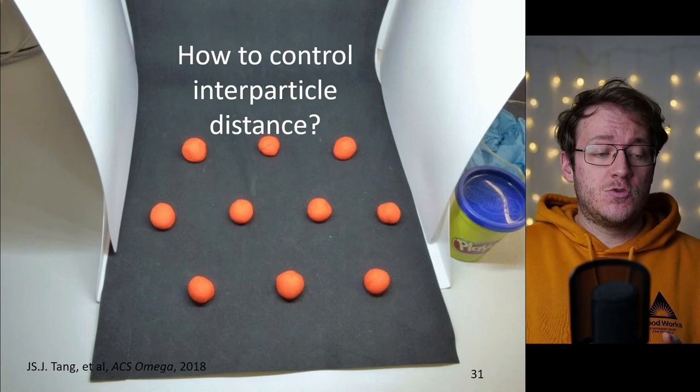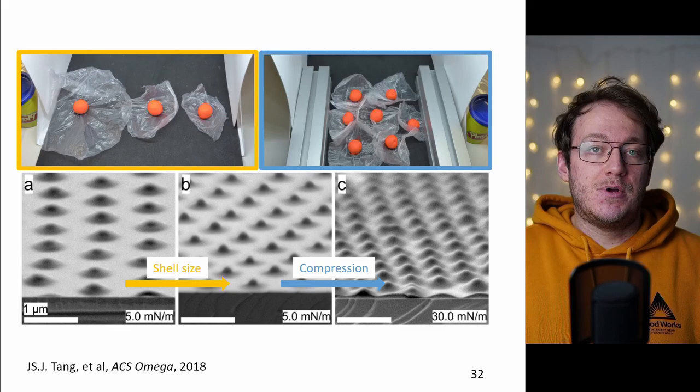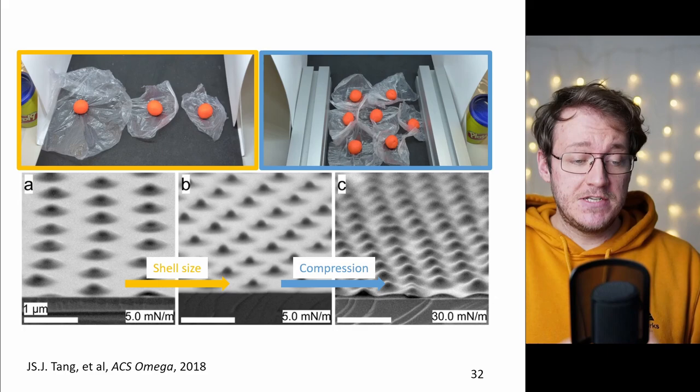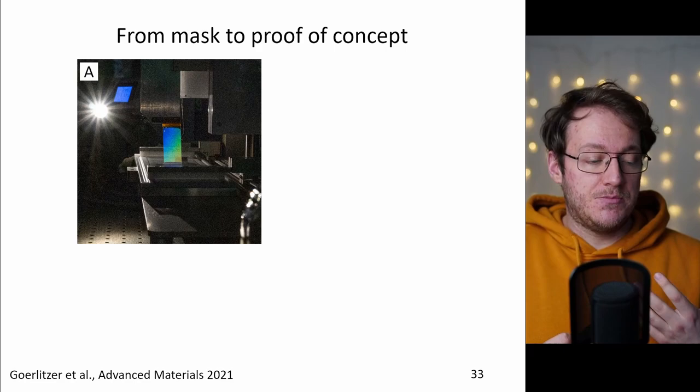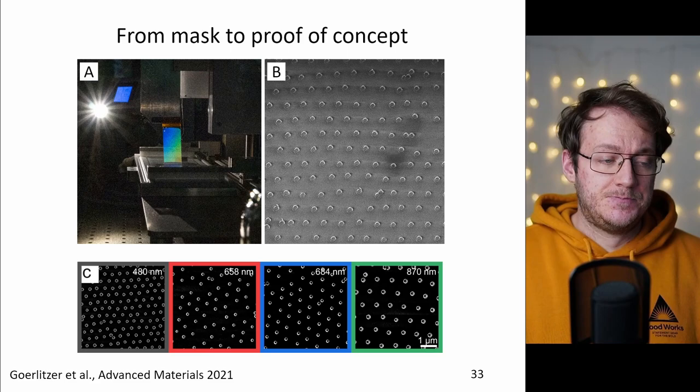Now the question is how can we control the spacing between the particles? What we can do is when we have a very big shell we can simply make the shell smaller and by that the particles are getting closer. If you want to have them even closer to each other you can also increase the interfacial pressure and simply push the particles together by using a barrier at the Langmuir trough. So with this we have a very good control over the distance between the particles so we can produce now crescents that are very highly ordered and we can control the lattice spacing for them which we did for four different lattices.